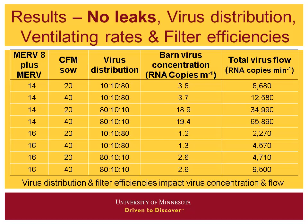With no leaks — everything going through the filters — this shows the comparison between MERV 8 plus MERV 14 and MERV 8 plus MERV 16 at different ventilation rates and distributions. Probably the biggest thing to observe is that with MERV 14 and an 80-10-10 distribution, we're in the 30 to 60 RNA copies per minute range, with concentrations near 19. Whereas with a MERV 8 plus MERV 16 system, concentrations drop to 1 to 2.5, and virus flows are in the 2,000 to 9,000 level.